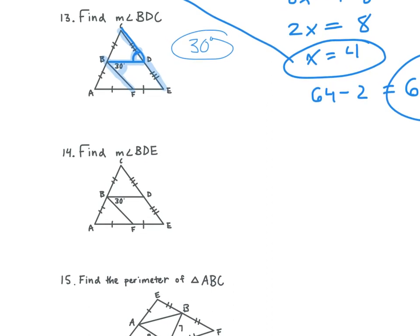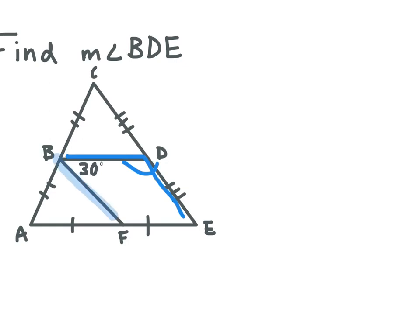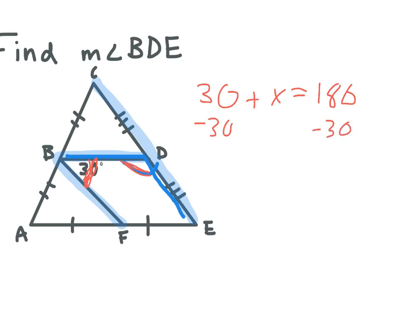Let's look at 14. Now we're finding angle BDE. We know that BF is parallel to CE, and BD is our transversal. What types of angles are this one and this one? Same side interior. So what do we know about same-side interior angles? They add up to 180. So 30 plus X is equal to 180. We subtract 30 and get X is equal to 150. So angle BDE is equal to 150 degrees.